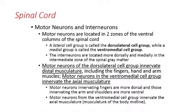So, the motor system and the sensory system can both be incredibly complex. I really want to try to simplify the motor system as much as possible. In the motor system, we really have sort of two major groups of neurons or motor neurons.